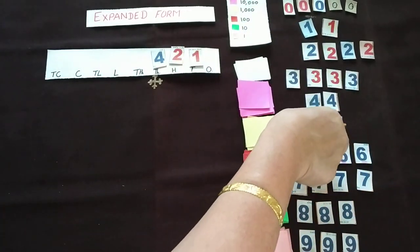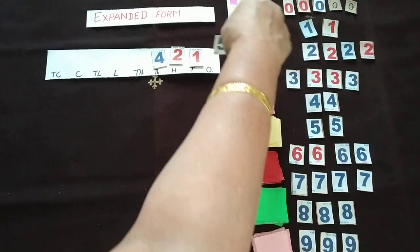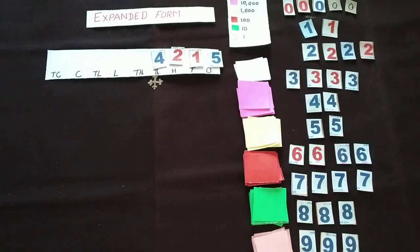So the student will write down this on the place value chart 4215. So at the same time the child is learning how to write down the numeral, how to read the numeral, and at the same time we will go for the expanded activity, expanded form.